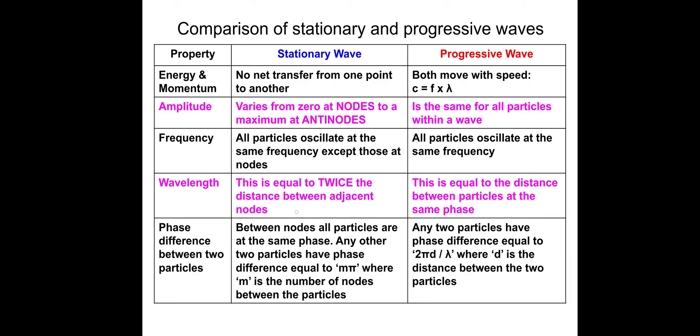Wavelength: this is equal to twice the distance between adjacent nodes. Wavelength on a progressive wave, this is equal to the distance between particles at the same phase.